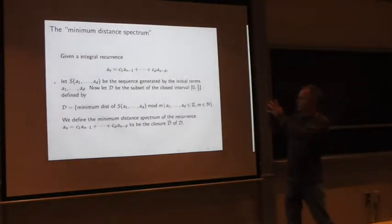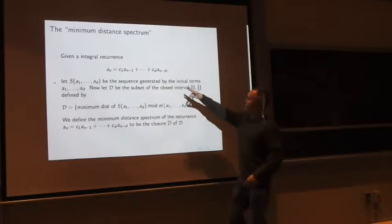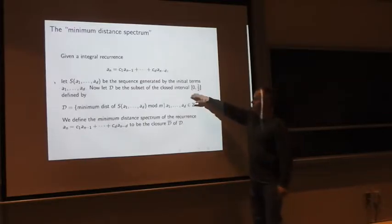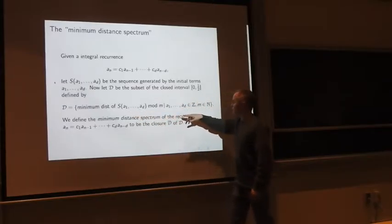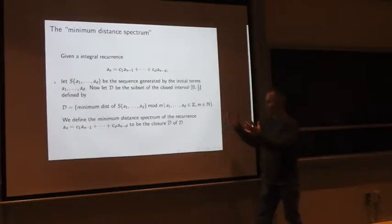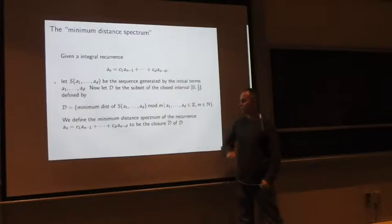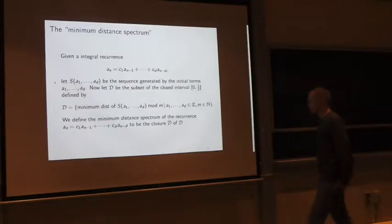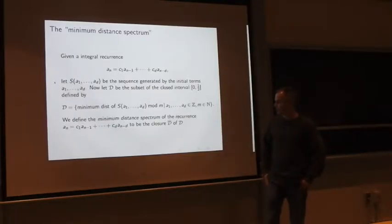So okay now let's consider a general integral recurrence. So where these coefficients here are integers and I want to consider the set of all sequences generated by any arbitrary initial terms which are integers and in any modulus. And so and then I'm going to define the subset of all possible minimum distances so I'm going to consider all moduli and all initial data. And I'm going to ask well what does that set look like and sometimes maybe it's convenient to look at the closure. And I'm going to call this, and you'll see why when you see some pictures, I'm going to call this the minimum distance spectrum.